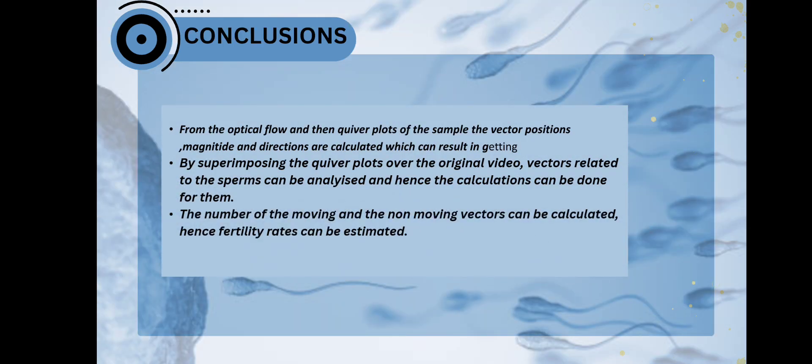Here is the conclusion. From the optical flow and quiver plots, we can determine the magnitude, direction and then calculate other things we want. By superimposing the quiver plots, we get the sperm analysis and their movements. The number of moving and non-moving vectors can also be calculated, which is in future studies. Thank you once again.